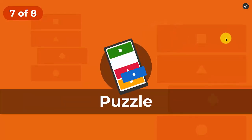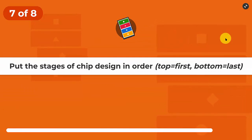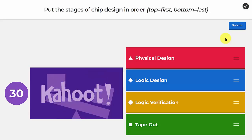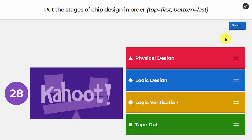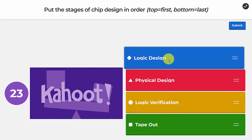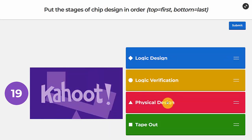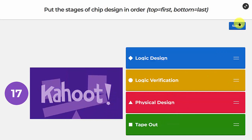Question seven is a puzzle: put the stages of chip design in order from first to last. Tape-out is at the bottom. Then: logic design comes first, then logic verification, then physical design, then tape-out.